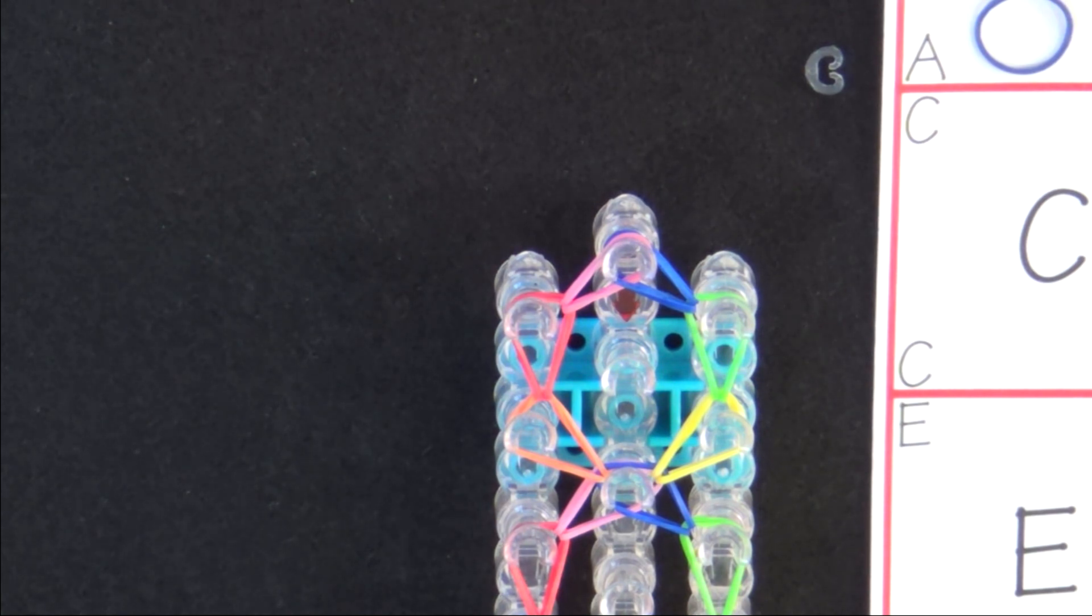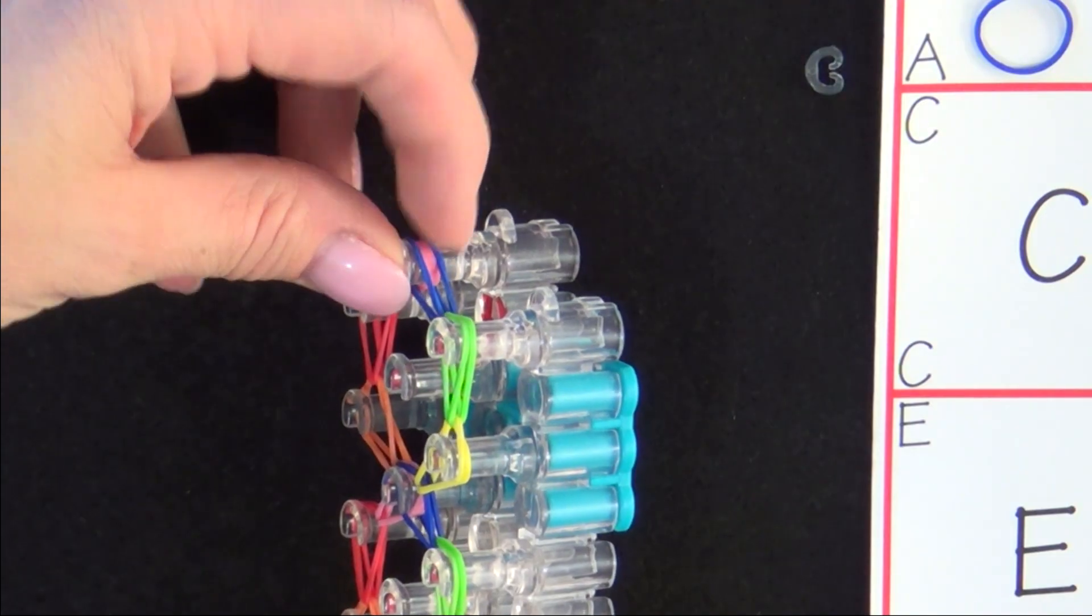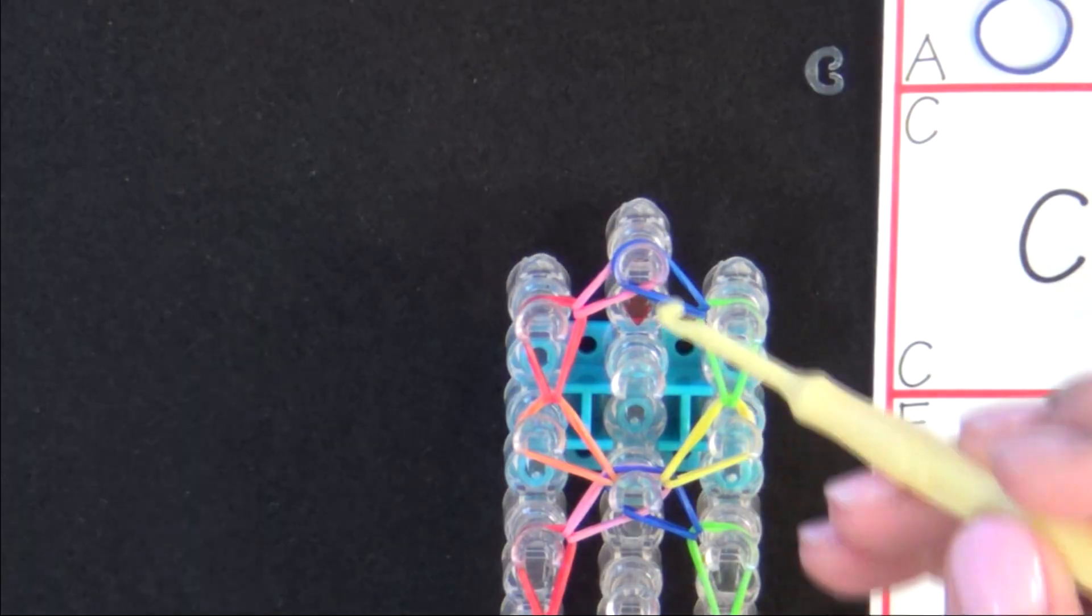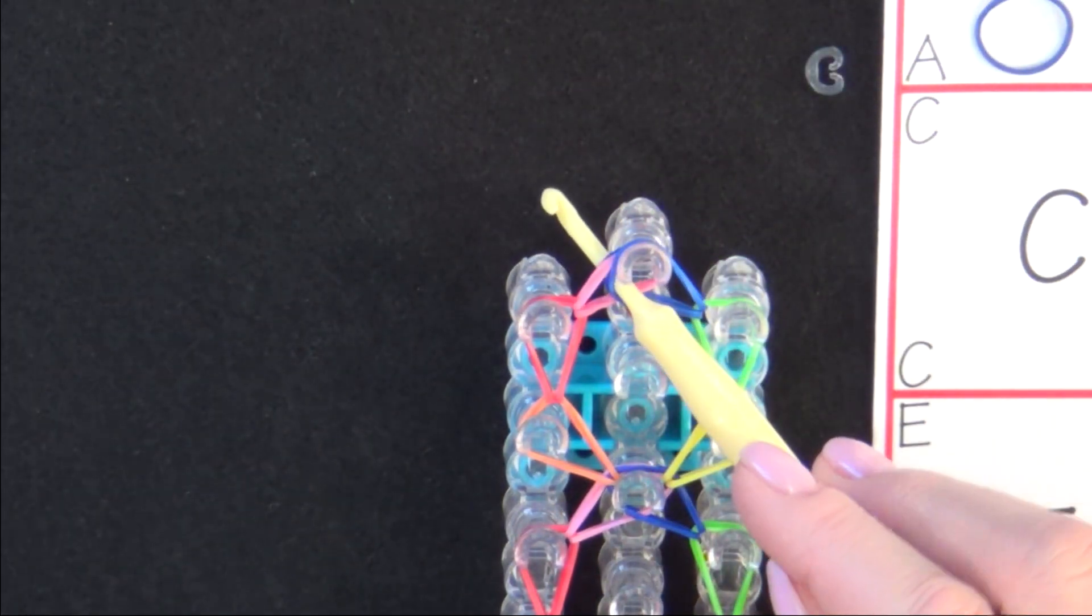Now it's time to finish the bracelet. You'll pull all the bands on this last pin up to the top. Then you place your hook down through the channel of that last pin and tilt it out to the side.